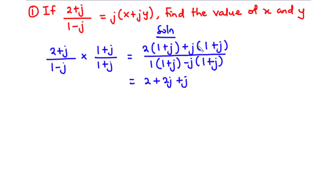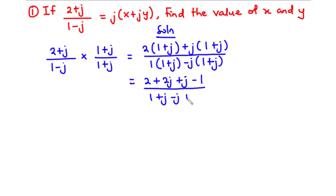And j times j equals j squared, which is negative 1, so we get minus 1. For the denominator: 1 times 1 is 1, 1 times j is j, negative j times 1 is negative j, and negative j times j is negative j squared, which gives positive 1. Combining: numerator gives 2 minus 1 = 1, and 2j plus j = 3j; denominator gives j minus j = 0, leaving 1 plus 1 = 2.